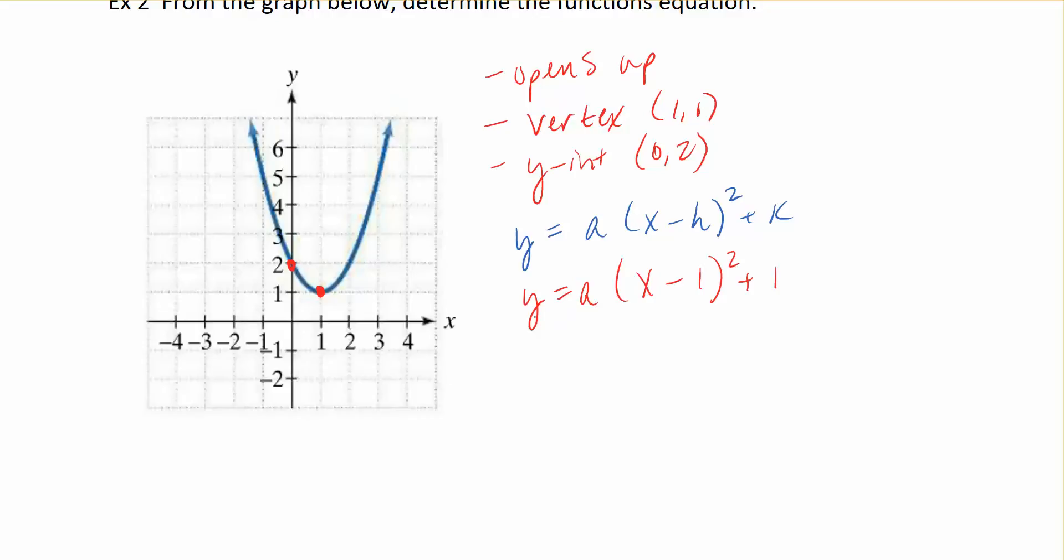We're going to do that now. I'm going to replace the y value with 2. So this is 2 equals a times, I'm going to replace x with 0, (0 minus 1) squared plus 1.